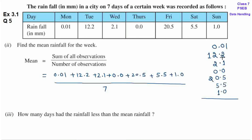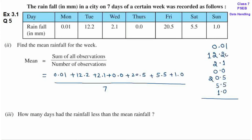यहां पर देखो — 0.01 को छोड़के बाकी जितने भी decimal numbers हैं, उनमें decimal के बाद सिर्फ एक digit है. So, अगर आपको confusion हो रहा है, तो आप end में 0 लगा सकते हो, ताकि जब आप digits को add करो तो कोई confusion ना हो. यहां पर आ जाएगा 1, क्योंकि 1 में बाकी के सारे 0s ही add हो रहे हैं.